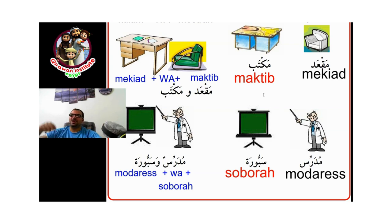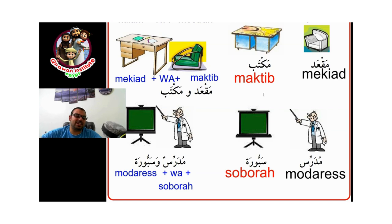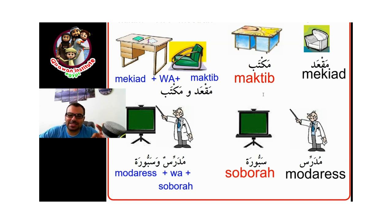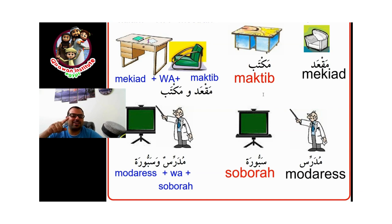So today we are going to use a different word. It is in the classroom. What does it mean, 'classroom'? We said it before: hujratu dirasa. Hujratu means room. Repeat: hujratu dirasa, hujratu dirasa. Pronounce it correctly, the same as the Arabs do.